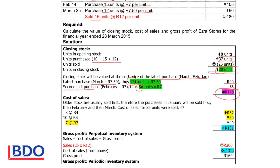Now we calculate the cost of sales. Older stock is always sold first, so the things bought in January are sold first, then February, then March. We sold a total of 25 units. At the beginning of the year we had 8 units that cost R4, so that was R32. Then we bought 10 units at R5, costing R50. The total so far is 18 units, so 25 minus 18 means from the third purchase we still need 7 units at R7, which is R49. So our cost of sales is R131.